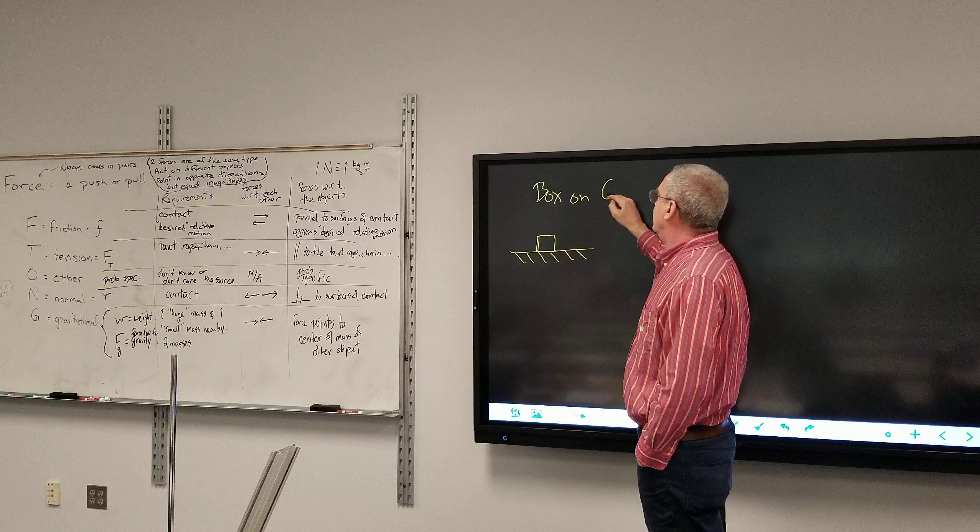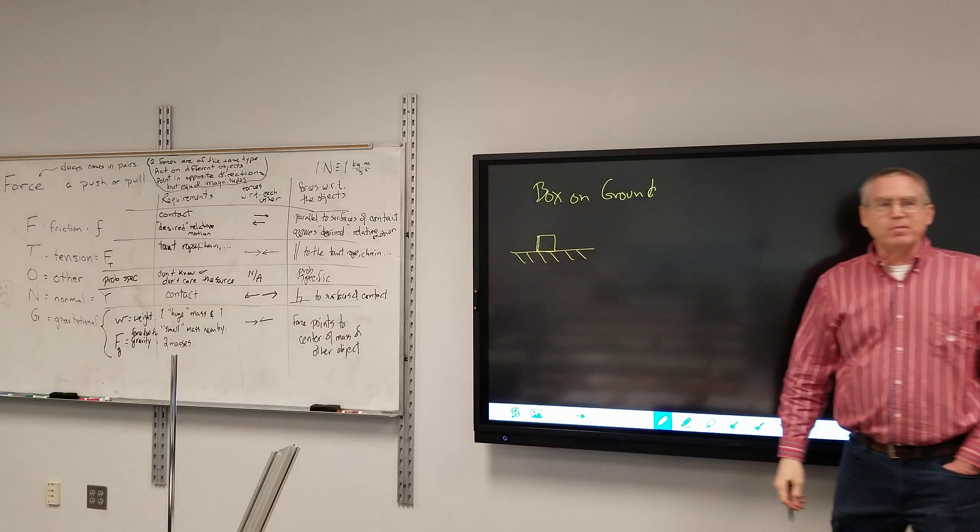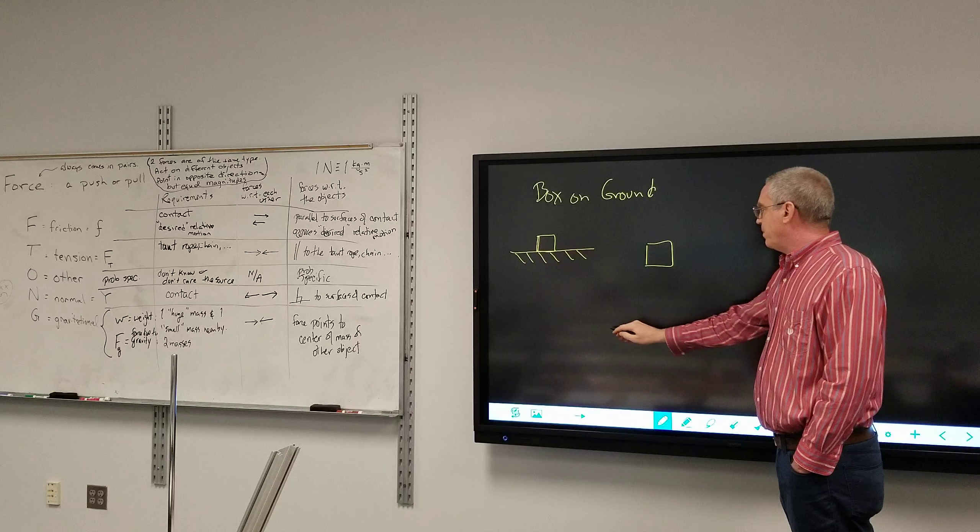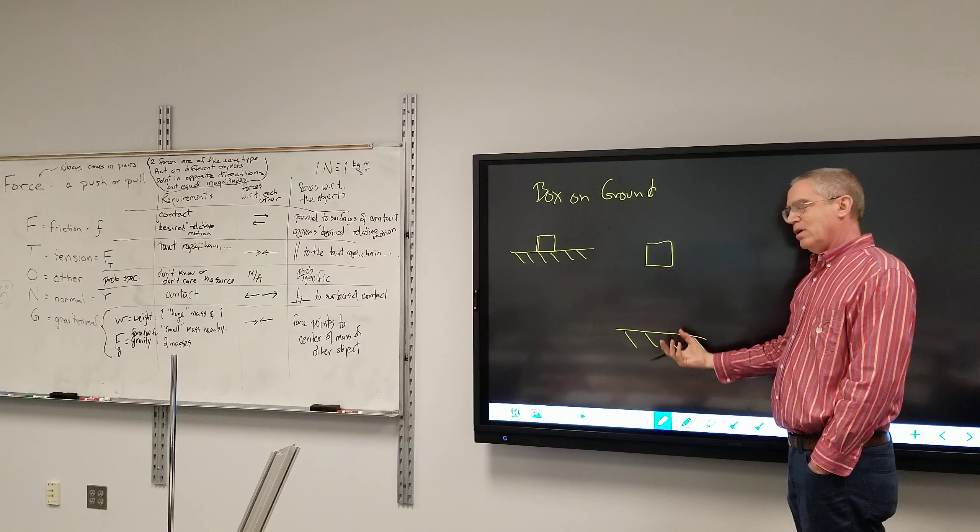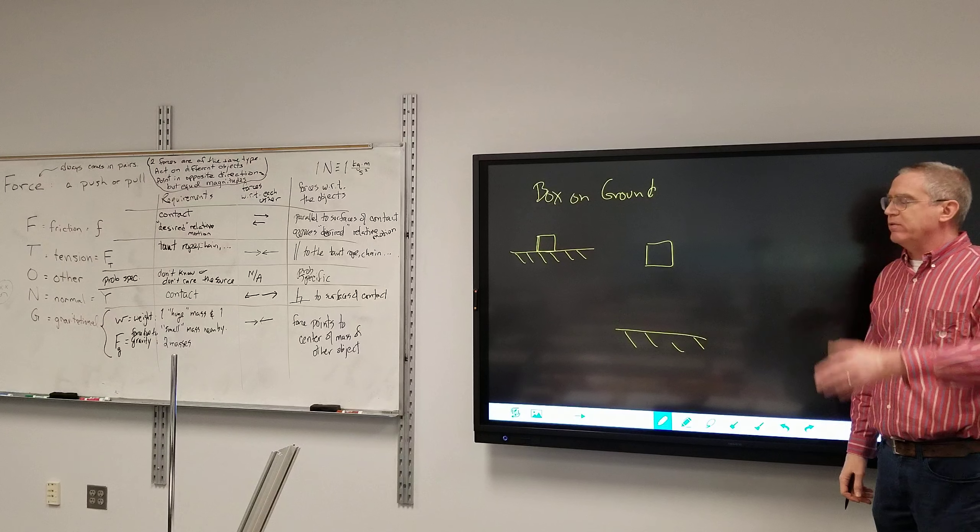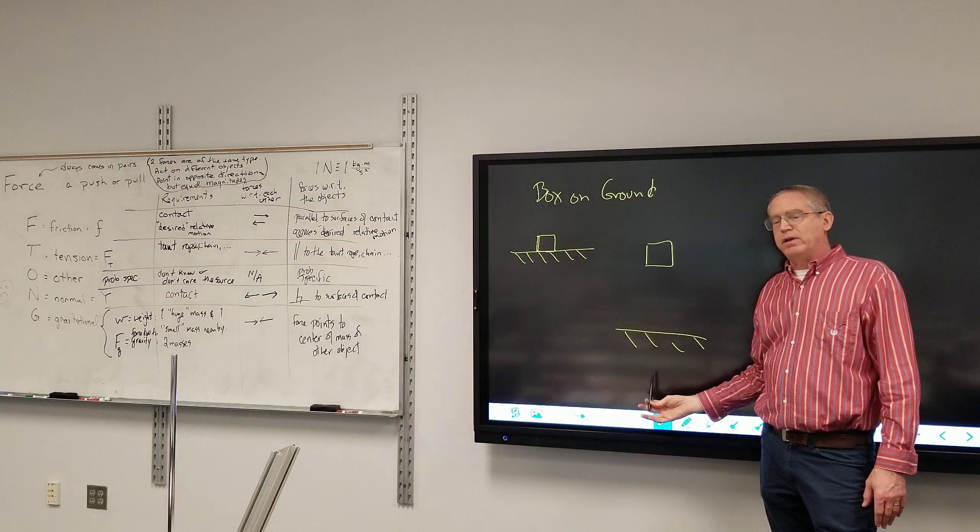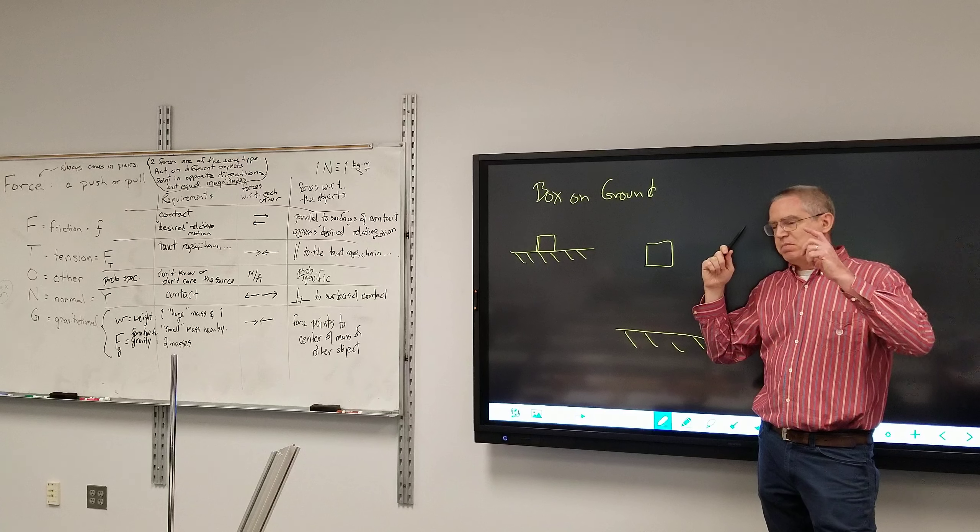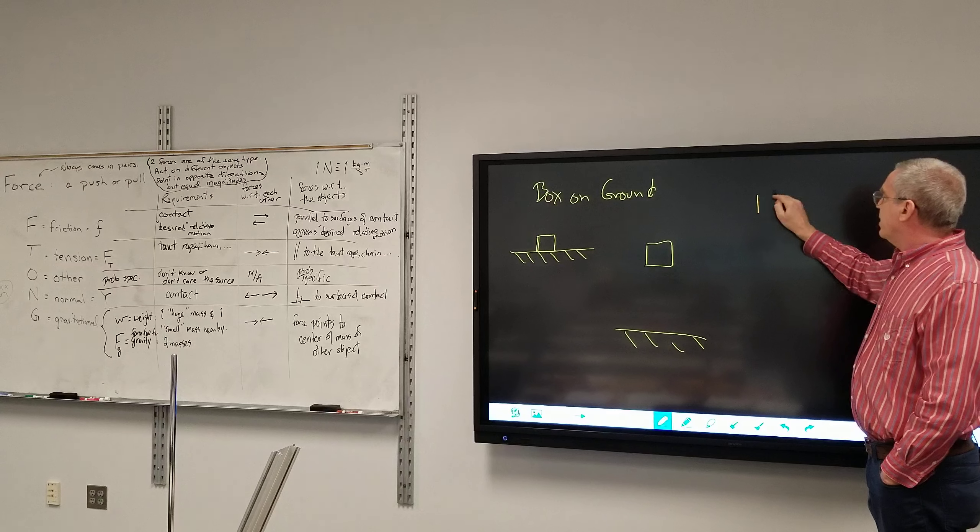All right. Box on Ground. So the first thing I'm going to do is I'm going to draw the two objects separate so that I have room for my arrows. So there's my box, there's my ground. I'm not saying the box is in the air. All I've done is I've drawn a box, I've drawn the ground. I don't have to draw them in the same orientation, but I strongly recommend it. I've got the checklist here.